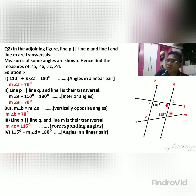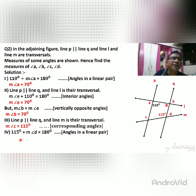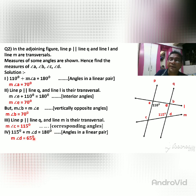For angle D: the 115° angle and angle D are linear pairs of each other, so 115° + D = 180°. Moving 115 across: D = 180 − 115 = 65°. So major angle D is equal to 65°.